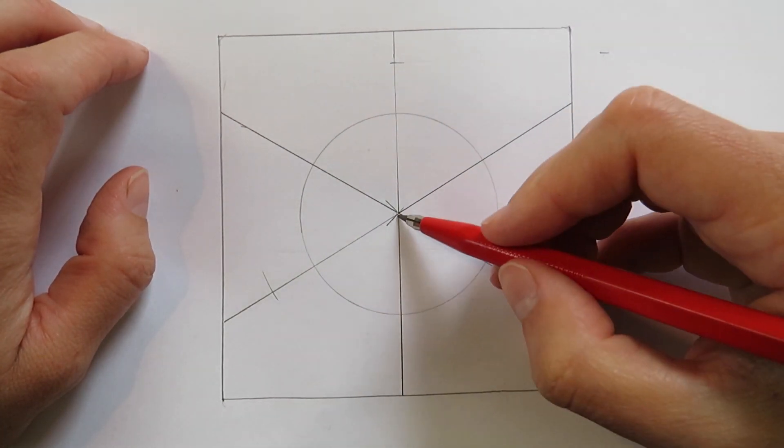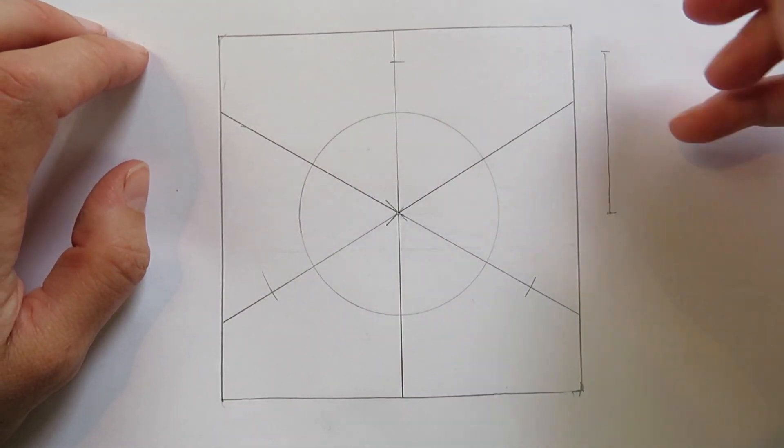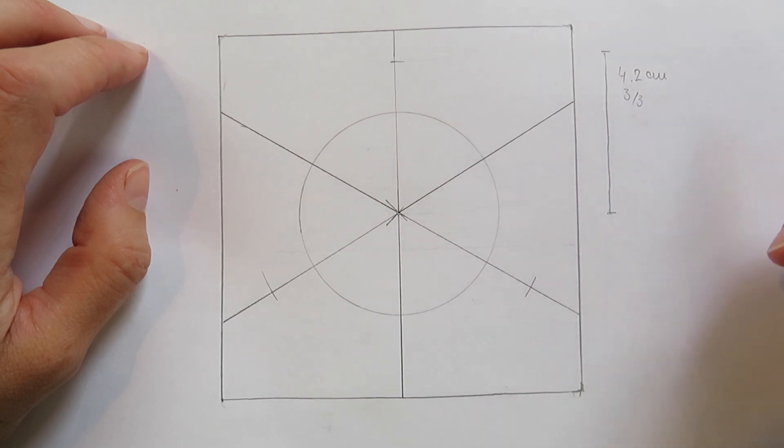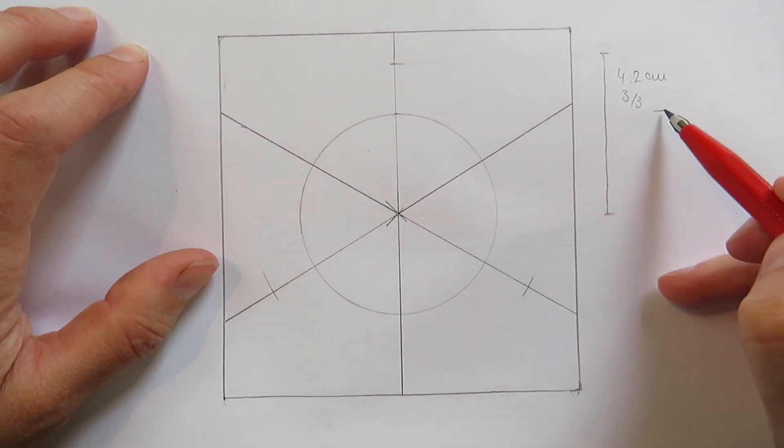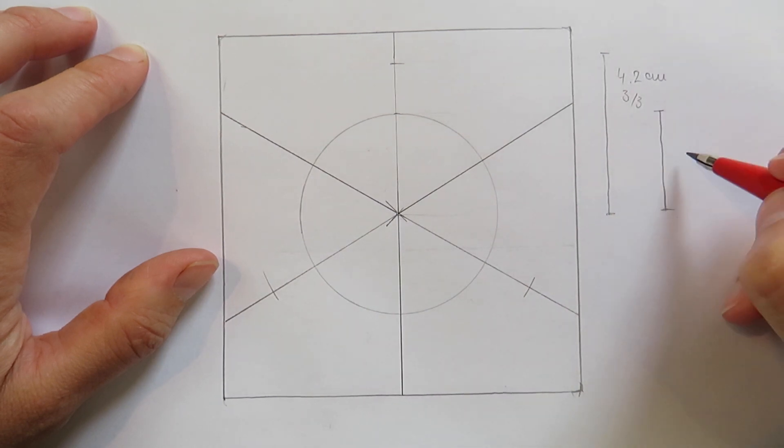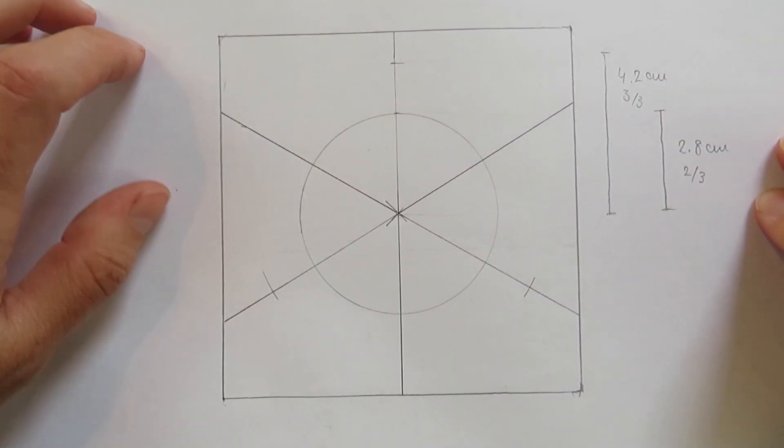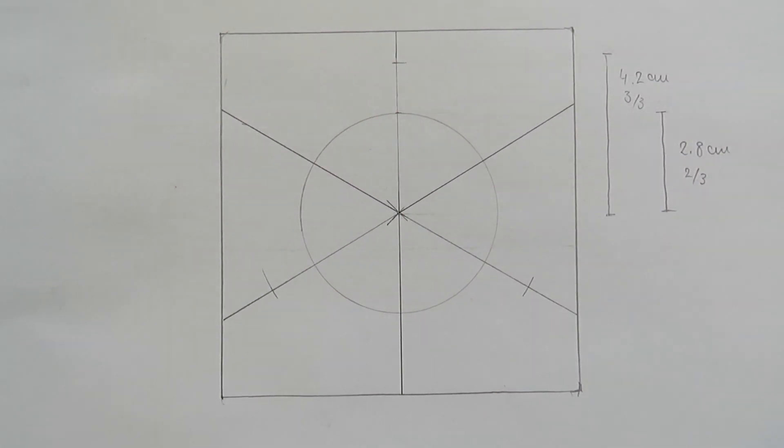The next step is drawing a circle that's two-thirds of the size, like 2.8 centimeters. Just to clarify, this piece is 4.2 centimeters like three-thirds, and the radius of the circle is 2.8 centimeters, which is two-thirds of this bigger piece. Basically, you can use any size and keep this proportion of thirds in mind.